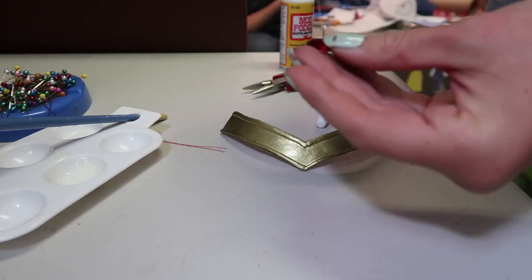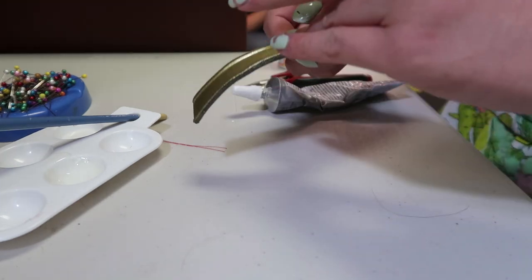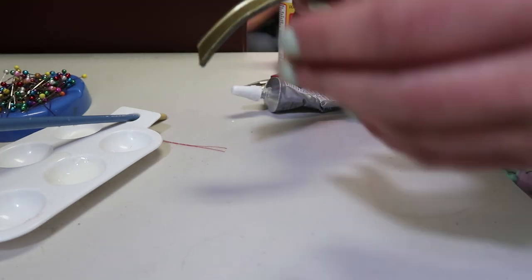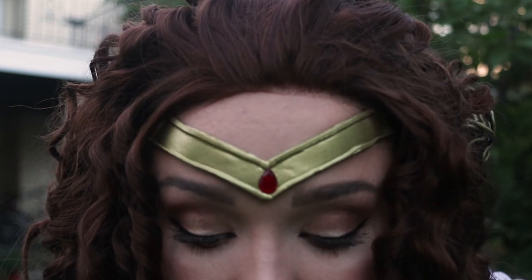When the spray paint was dry, I glued down the gem I made for my crown using E6000, and then I glued the other two gems onto the bow and choker. And that's how you make Sailor Scout crowns and resin gems!